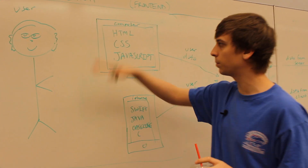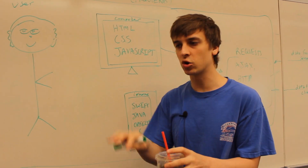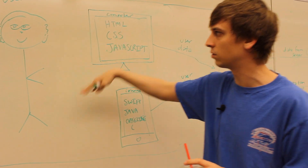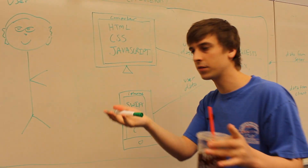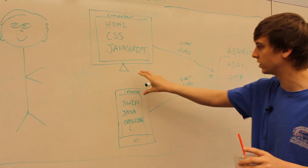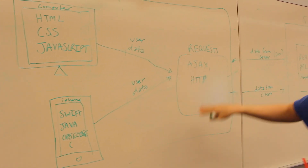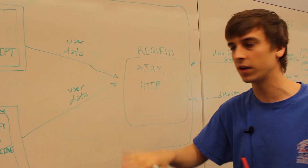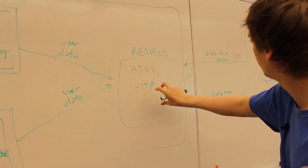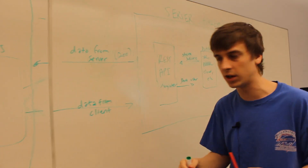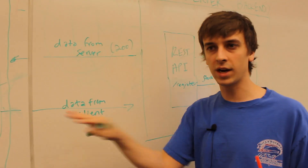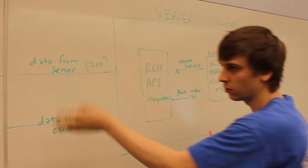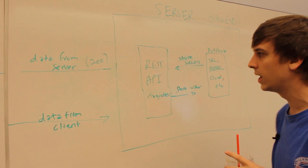So the user input — for example, creating an account on Facebook — means the user types in their email and password. What happens to that email and password? It gets sent from the device through requests, like AJAX or HTTP requests, to a server-side web server or some kind of server that will handle this data.